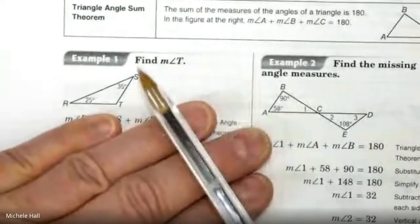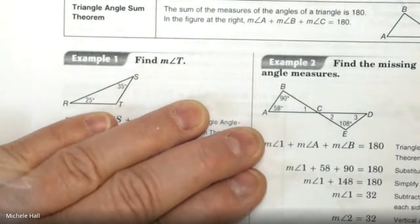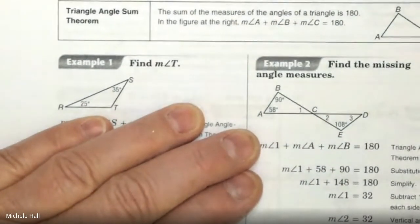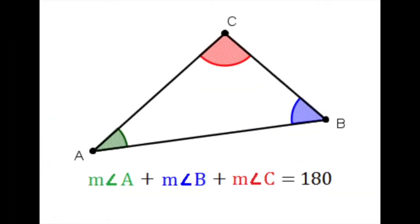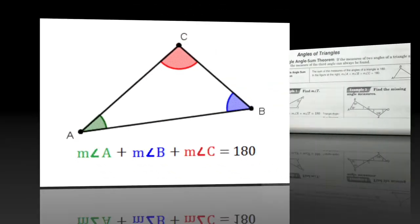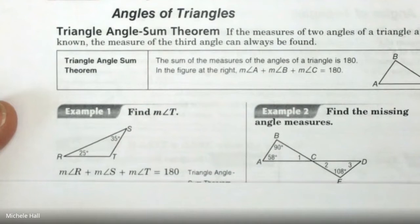How many degrees does the whole triangle equal? It equals 180. So if all of those angles equal 180, then it would be angle R plus angle S plus angle T equals 180. All the angles add up to 180.